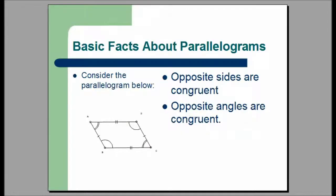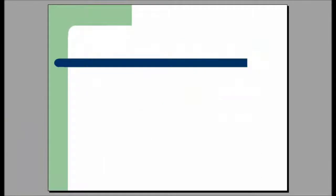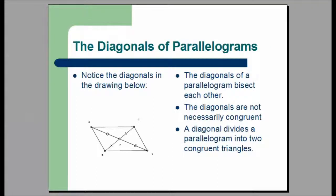Here are some basic facts about parallelograms. Recall that opposite sides are congruent. Opposite angles are congruent as well. The diagonals of a parallelogram bisect each other; however, those diagonals are not necessarily congruent. A diagonal divides a parallelogram into two congruent triangles.